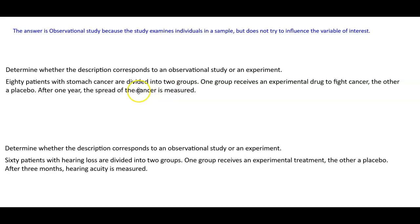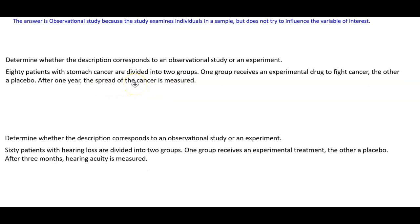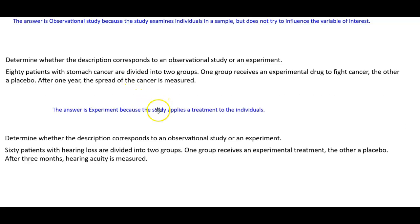Now, again, let's determine whether the description corresponds to an observational study or an experiment. Eighty patients with stomach cancer are divided into two groups. One group receives an experimental drug to fight cancer, the other a placebo. After one year, the spread of the cancer is measured. The answer is experiment because the study applies a treatment to the individuals.